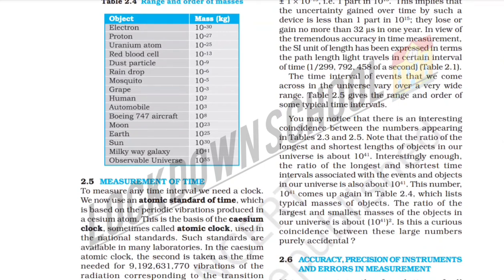You may notice that there is an interesting coincidence between the numbers appearing in tables 2.3 to 2.5. The ratio of the longest and the shortest length of objects in our universe is about 10⁴¹. Interestingly, the ratio of the longest and shortest time intervals associated with events and objects in our universe is also 10⁴¹. This number 10⁴¹ comes up again in table 2.4, where the ratio of the largest and smallest mass of objects in our universe is about 10⁴¹ squared. Is this curious coincidence between these large numbers purely accidental?